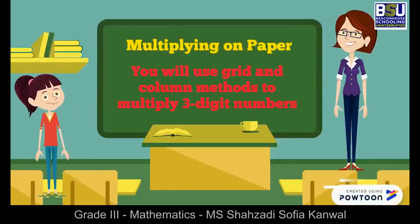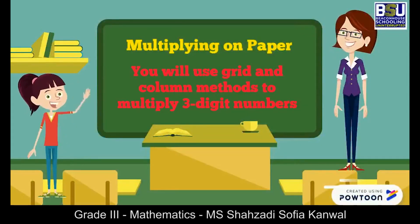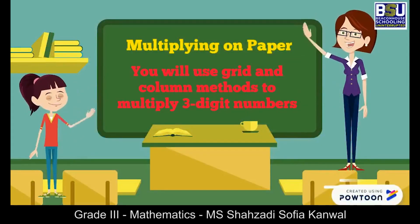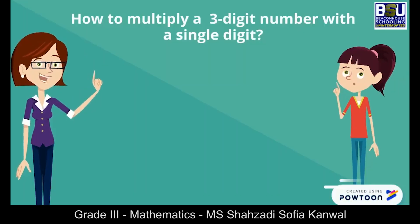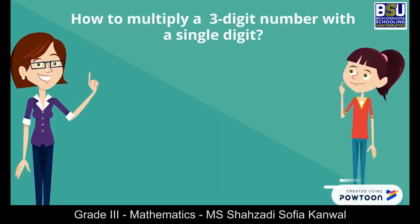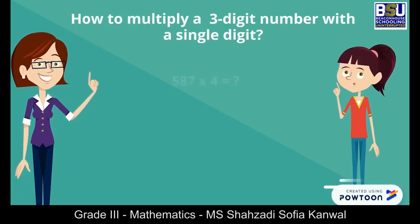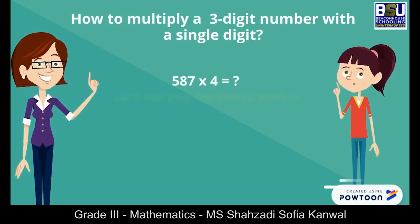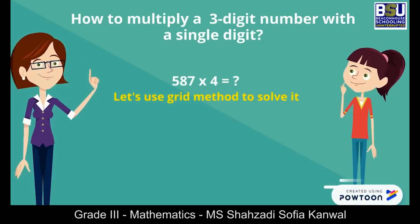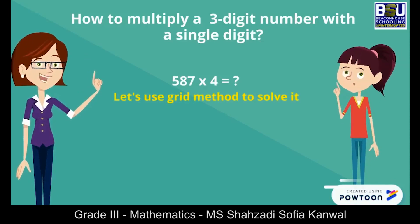Students, today you will use grid and column methods to multiply 3-digit numbers. You will learn how to multiply a 3-digit number with a single digit. Let's multiply 587 by 4. For this you will use the grid method to solve it.